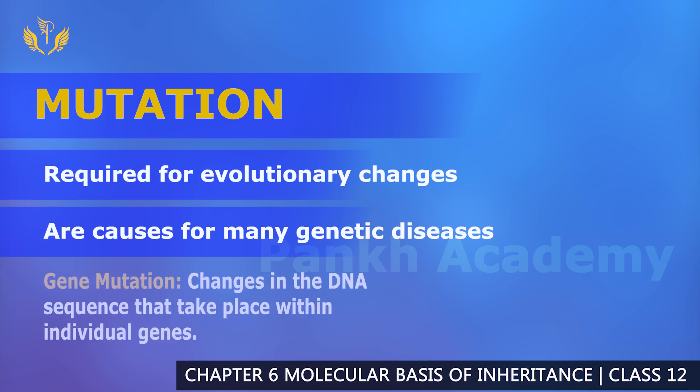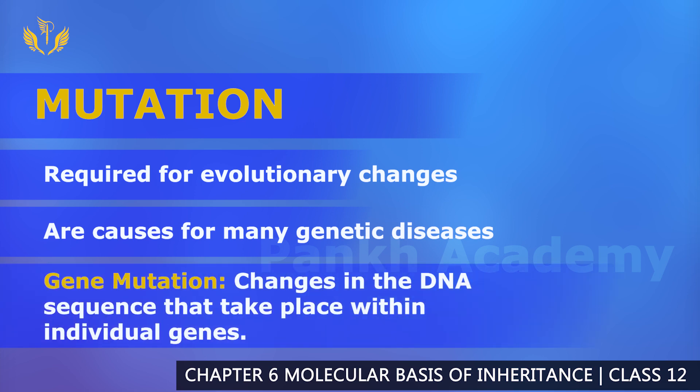We will now talk about gene mutation. Gene mutation can happen in many ways. Gene mutation refers to changes in the DNA sequence that take place within an individual gene. A normal gene produces a normal protein, but a mutated gene results in an abnormal protein or no protein at all.